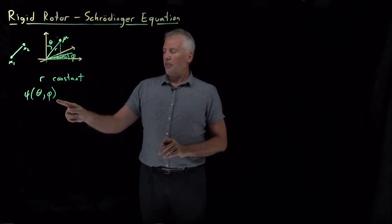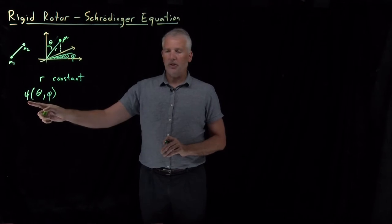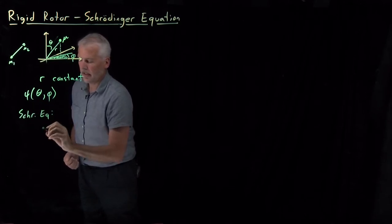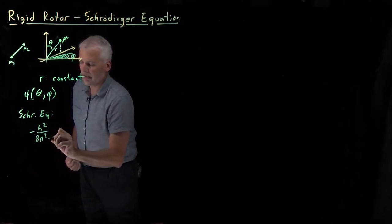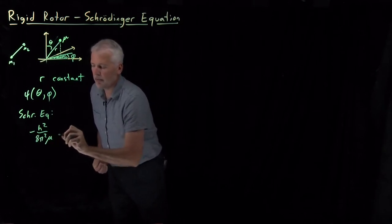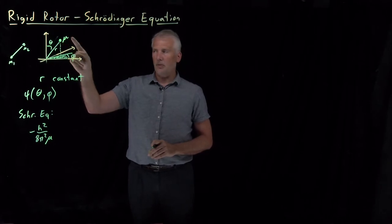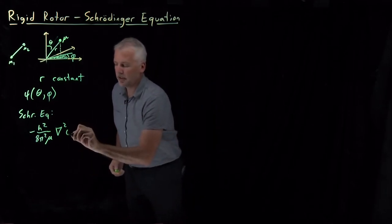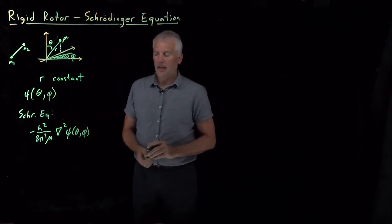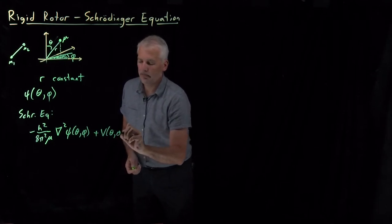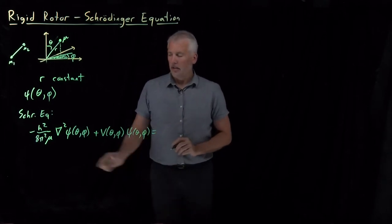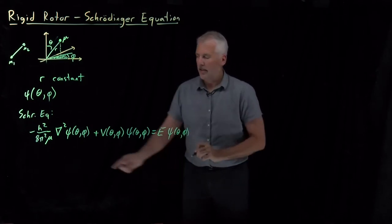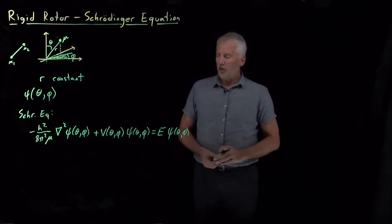To describe this system quantum mechanically with a wave function, we need to use Schrödinger's equation. In general, Schrödinger's equation has a kinetic energy term — some constants minus h squared over 8 pi squared times the mass, which here is the reduced mass mu — times the Laplacian acting on the wave function, which depends on theta and phi, plus a potential energy term. Kinetic energy plus potential energy equals total energy E: H psi equals E psi.